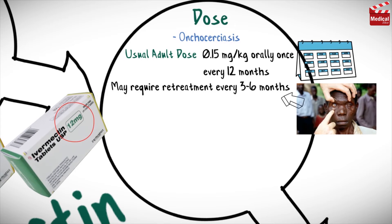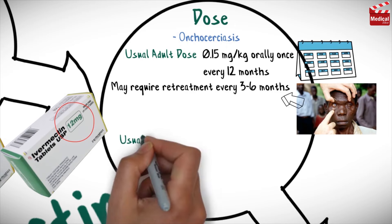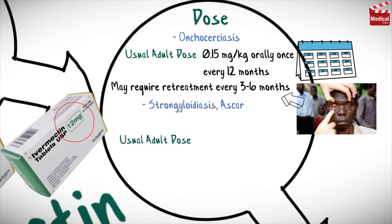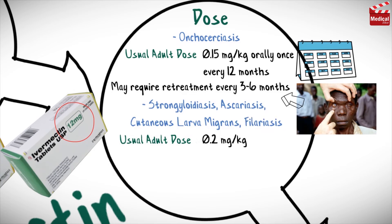Retreatment may be considered at intervals as short as three months. The usual dose for adults for strongyloidiasis, ascariasis, cutaneous larva migrans, and filariasis is 200 micrograms per kilogram orally, once.